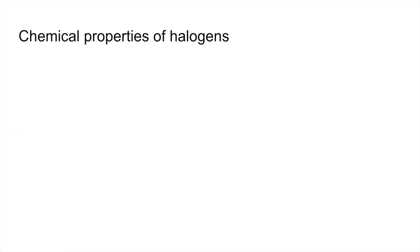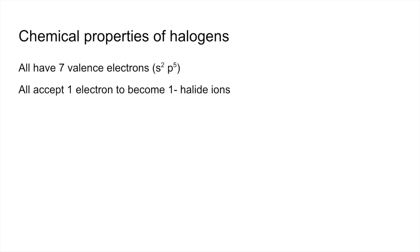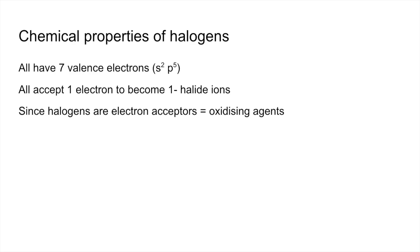Moving on to the chemical properties of halogens: they all have seven valence electrons, so their outer shell configuration is S2P5. They all accept one electron to become a 1− halide ion — so fluorine becomes fluoride F−, and so on. Since halogens are electron acceptors, they are classed as oxidizing agents — they cause other substances to lose electrons. Their oxidizing power decreases down the group.